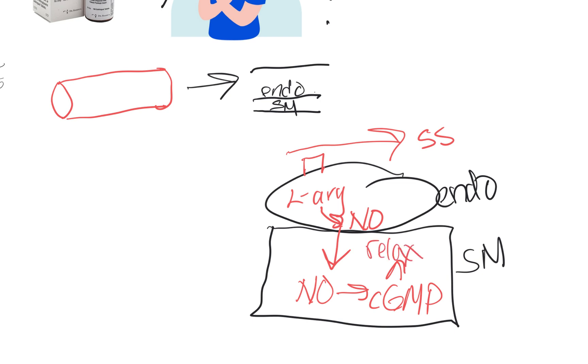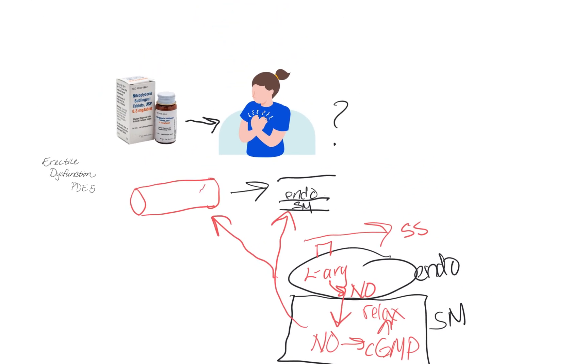When that smooth muscle relaxes, that allows the vessel to dilate, so that we can have more space for blood flow through the vessel. If there's more blood flow through the vessel,